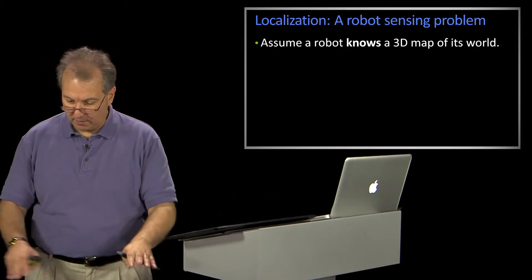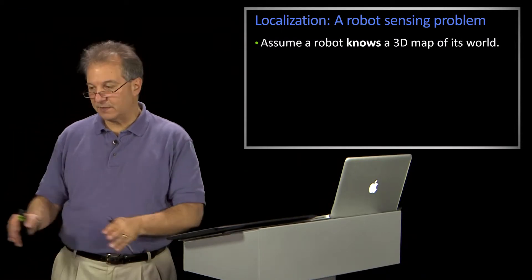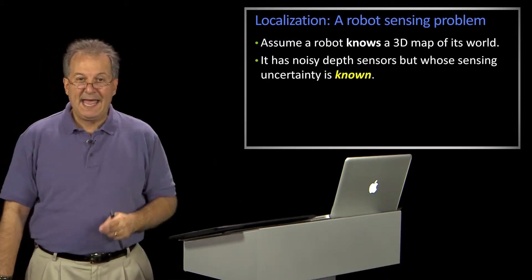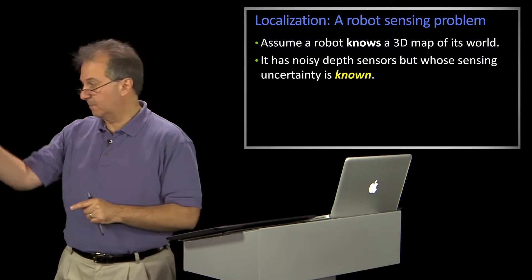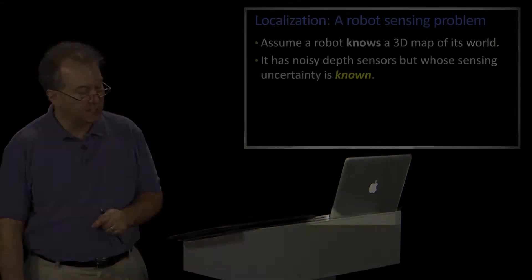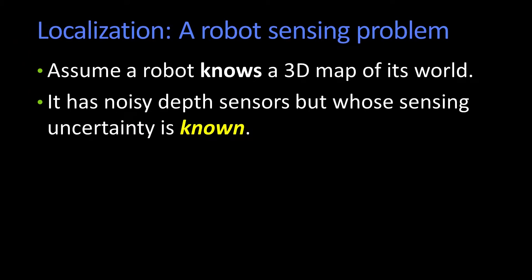And for now, we're just going to worry about a robot running around on the floor, so it's not climbing stairs, it's just running around. And let's assume also that it has noisy depth sensors, so it can measure depth in a lot of different directions. And they're noisy, so the measurement is uncertain, but we know about the uncertainty, that is, we have a sensor model, okay?